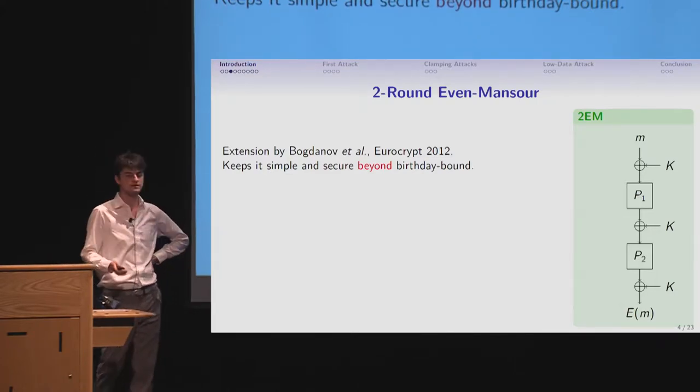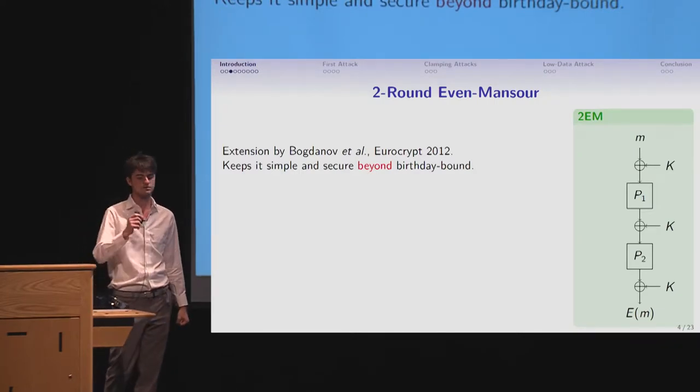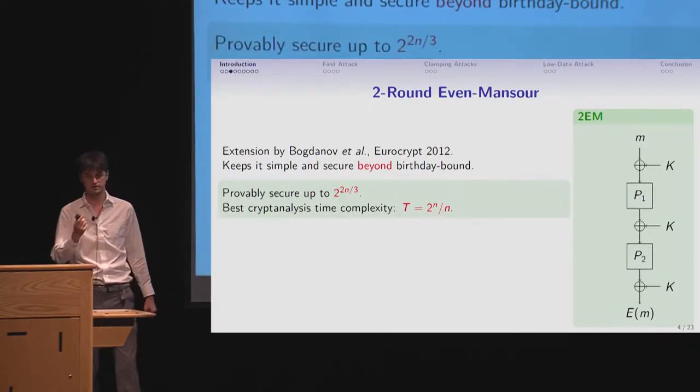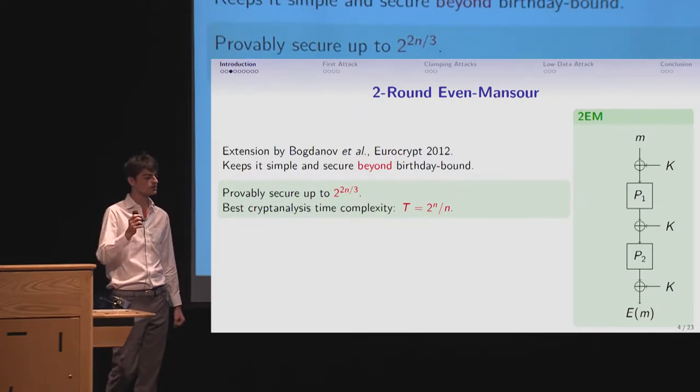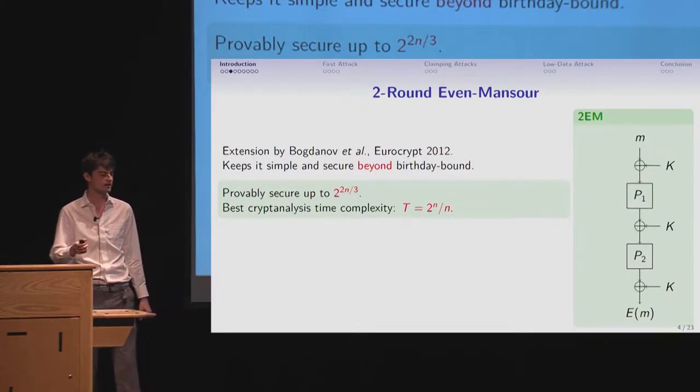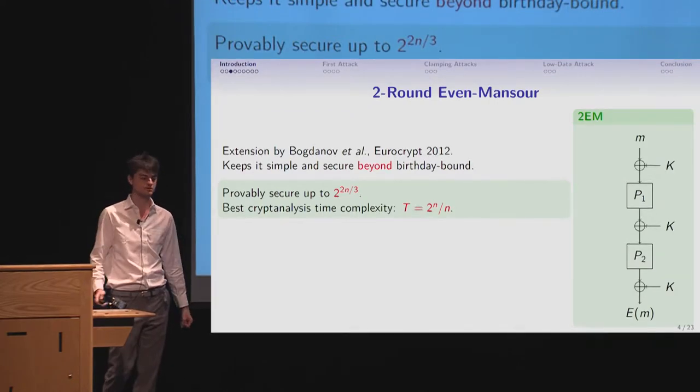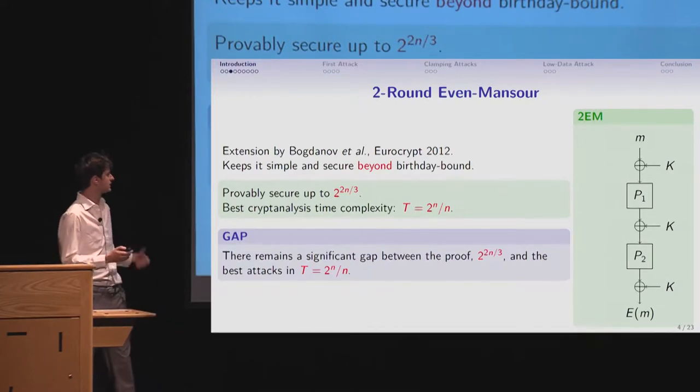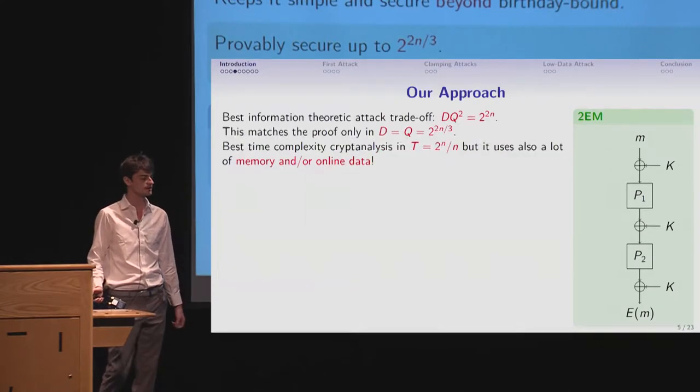What is it? Well, it's an extension by Bogdanov et al in 2012. And the goal is to keep the construction simple, but secure beyond the birthday bound. What we know about it, we can prove the security up to 2 to the 2n over 3. However, when you look at the attack, the time complexity, the best time complexity of the attack, is only 2 to the n divided by n. So arguably quite close to a brute force of the key. So you have this gap, quite significant between the best proof and the best attack.